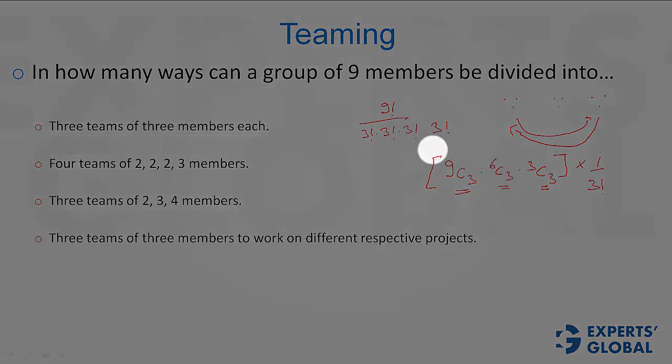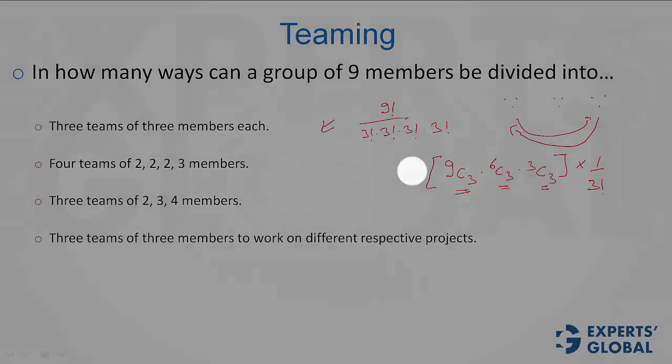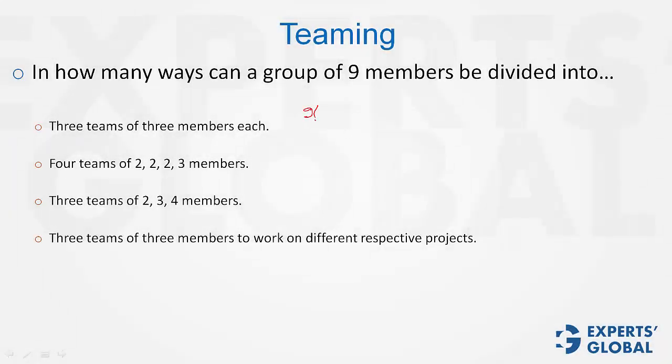Mathematically, the value would be the same. You do it this way or you do it this way. Simply the answer is 9 factorial upon 3 factorial, 3 factorial, 3 factorial, and then an extra 3 factorial, which is important.